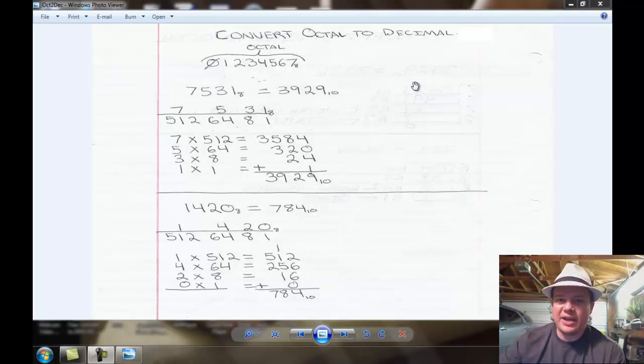An octal number system is a base 8 number system. Decimal is the one we're all familiar with, is a base 10 number system. These both are weighted number systems. And what that means is in a weighted number system, you have a ones place and a tens place, a hundreds place, a thousands place, and so on. Each position carries its own weight with it.